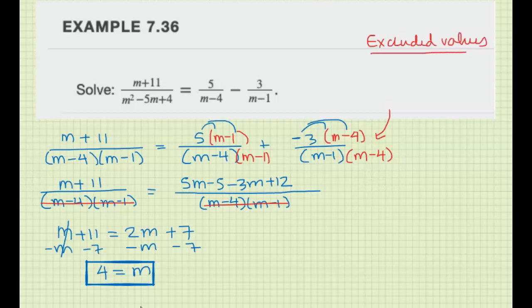So what values of m make the denominators equal to 0? If you look at your factors here, you can see that m equals 4 and m equals 1 will make division by 0. So you don't want that to be true. If I look at my solution, uh-oh, that's one of the excluded values.